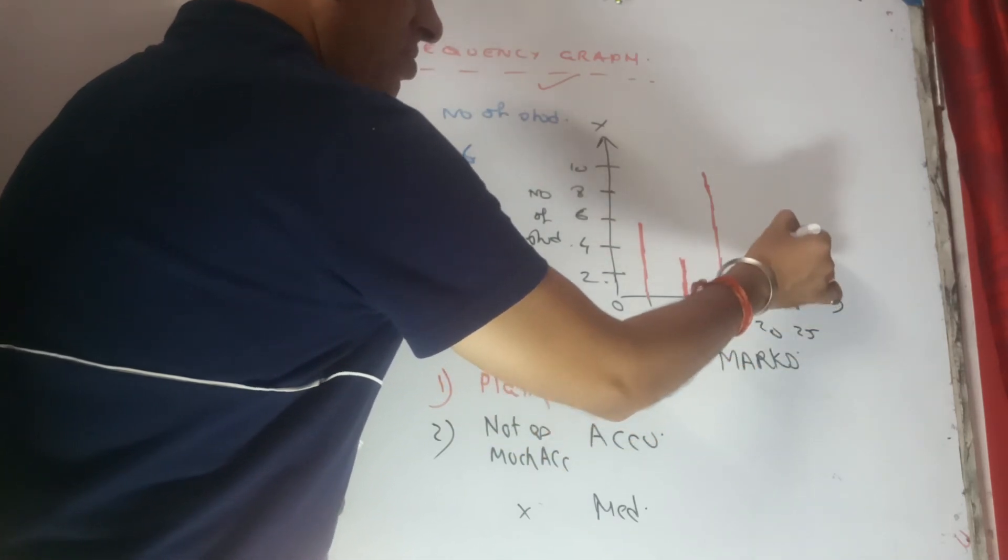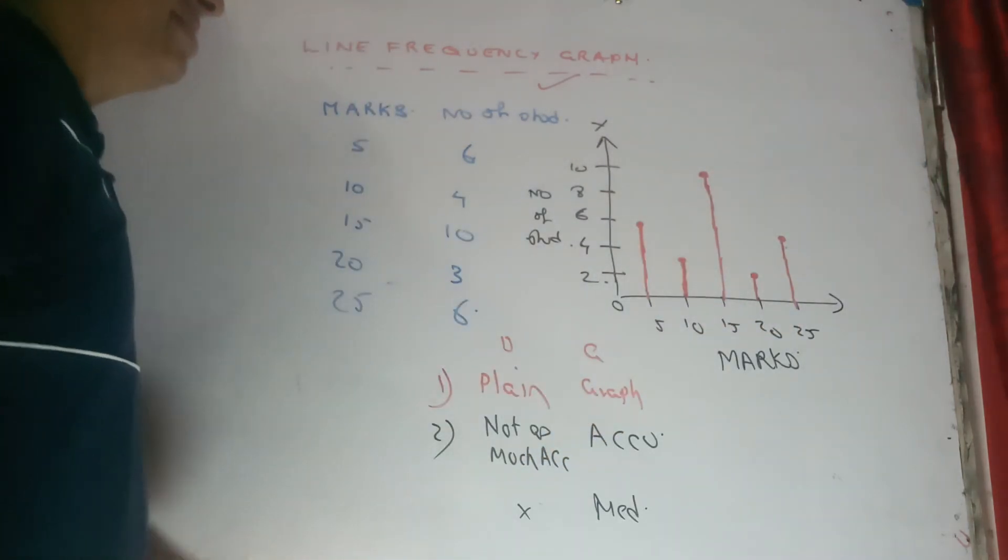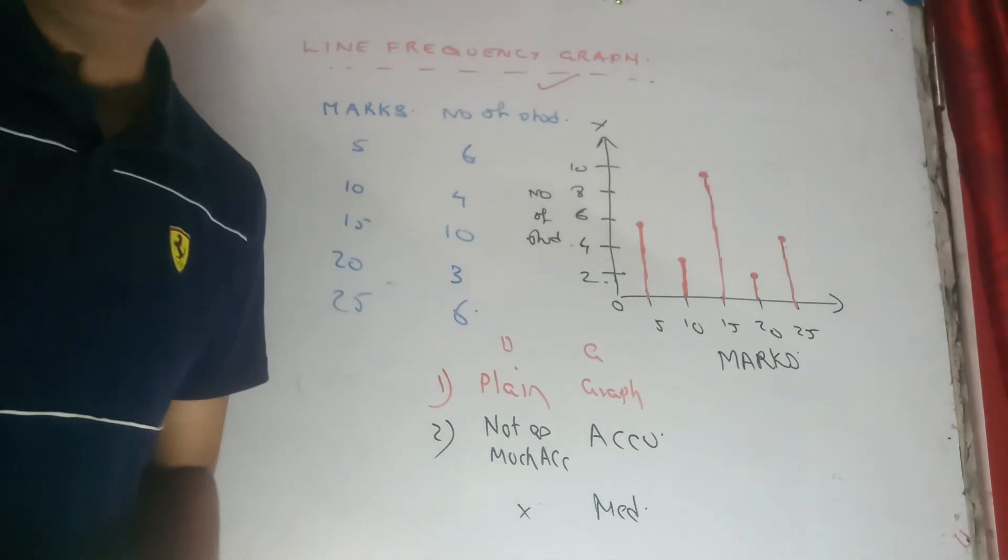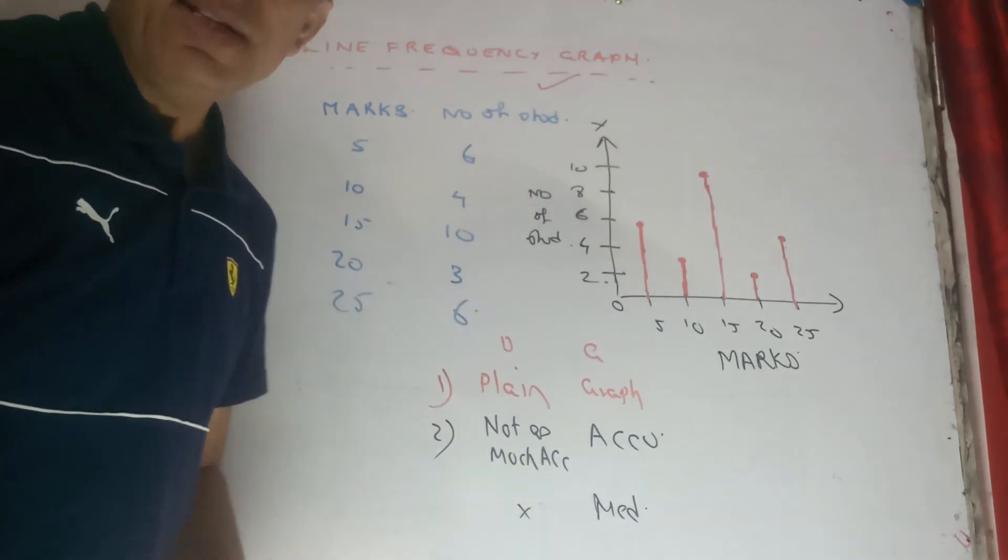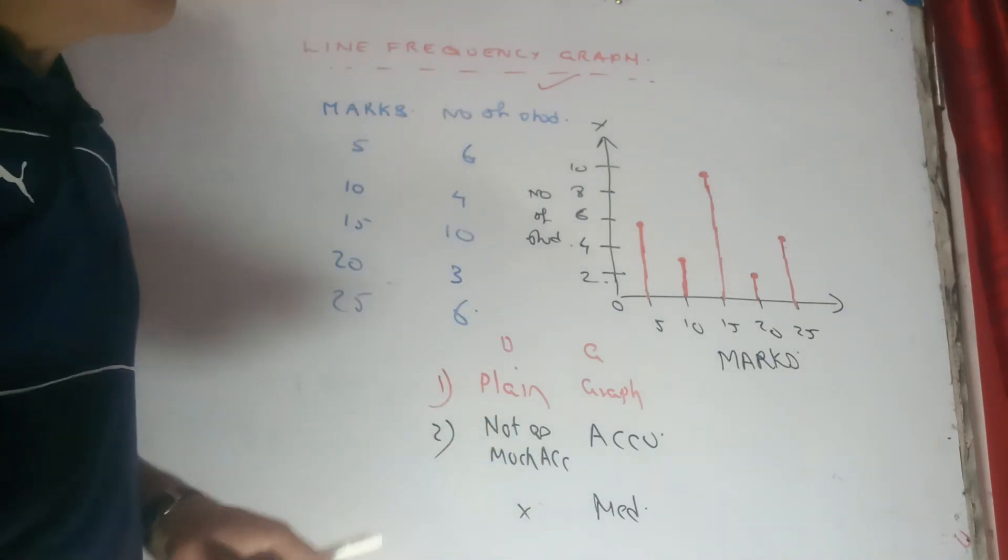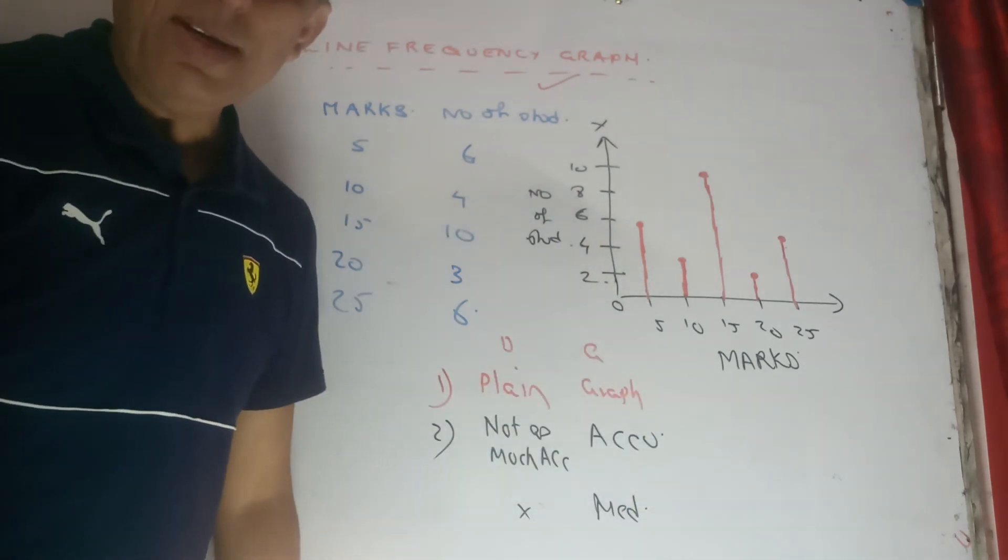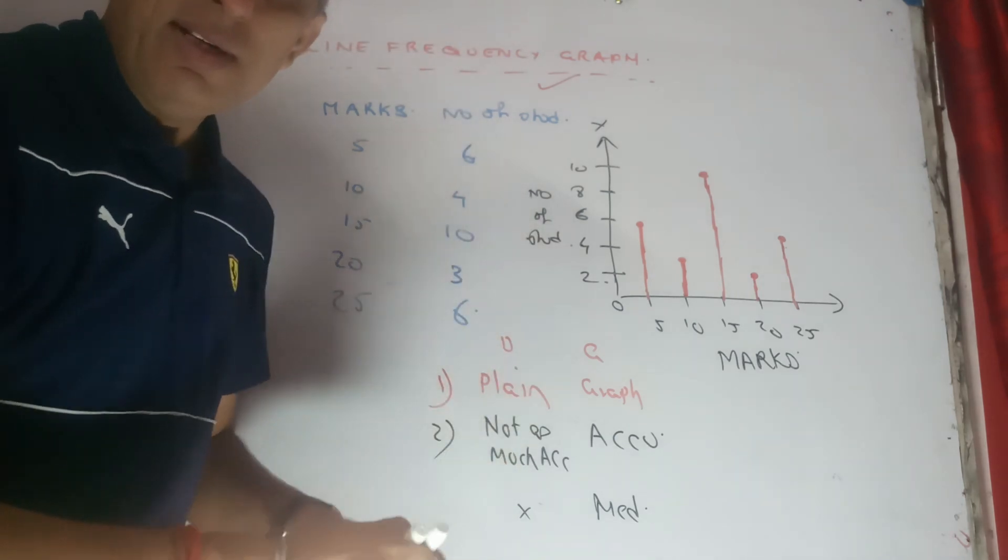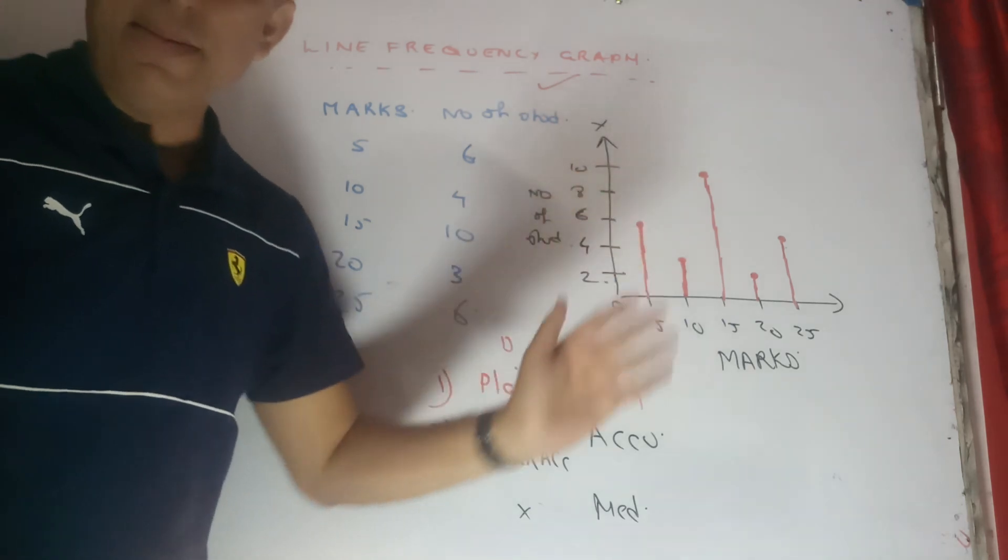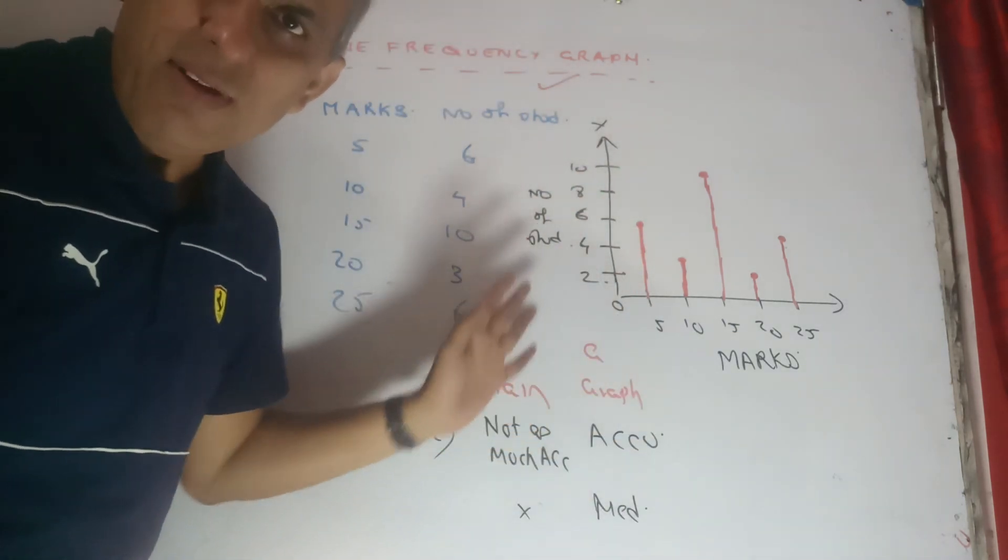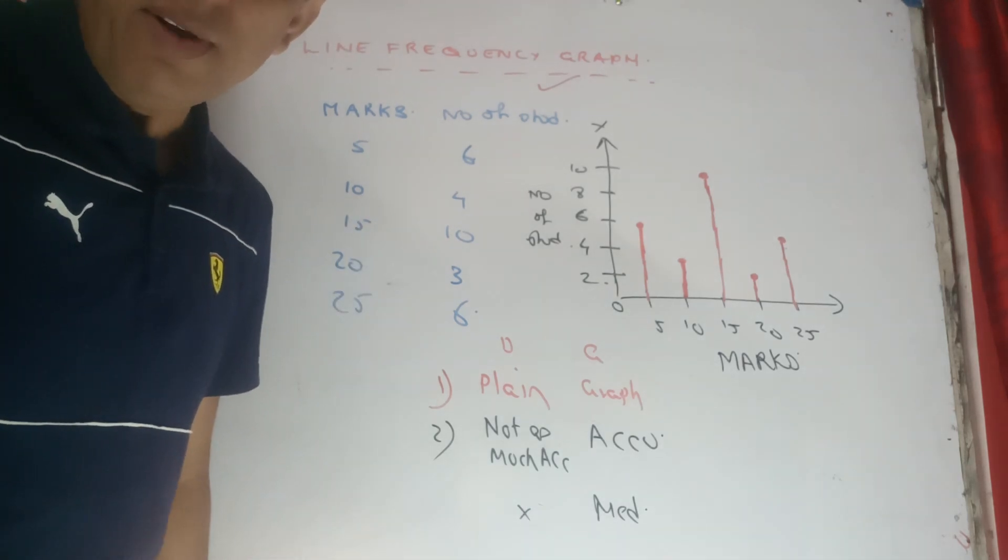So when our graphical presentation is in the form of a line rather than the rectangles which we have seen in the diagrammatic presentation, such type of graph is called a line frequency graph. You can also present the things related to it, such as on which axis we have taken what. But that's how line frequency graph is. I hope all of you have understood it. More graphs to come in the next video.